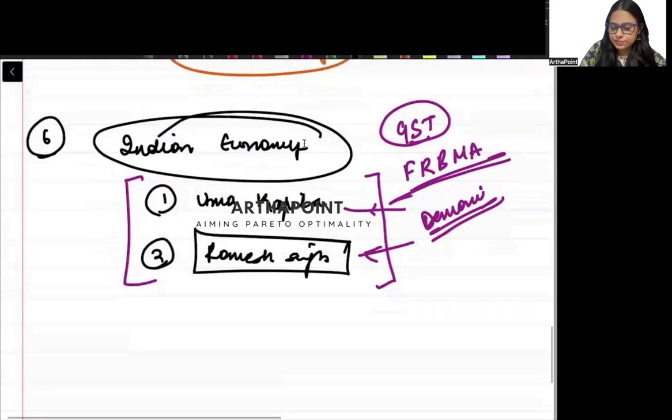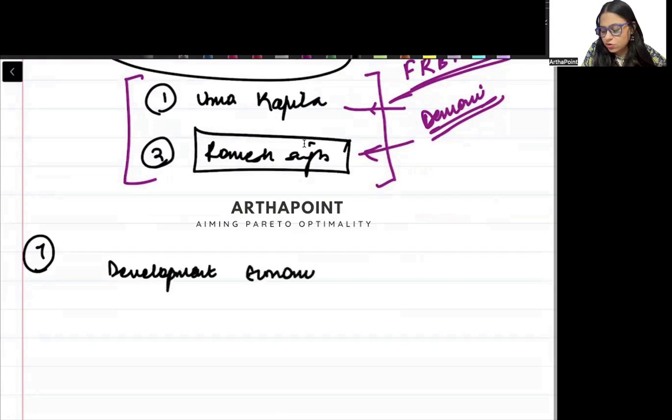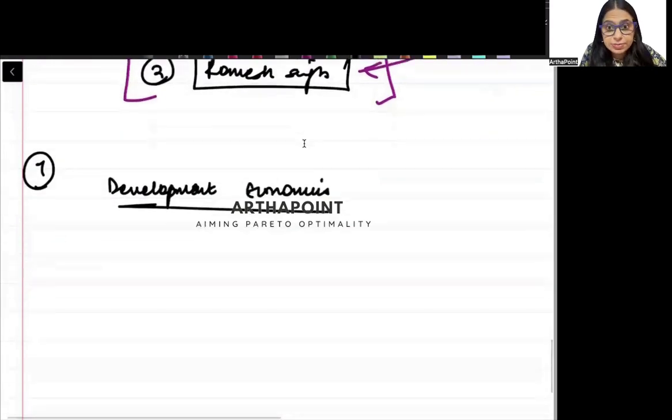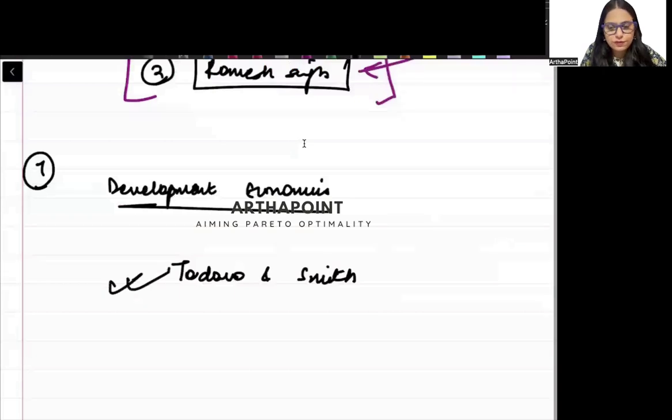Then you have Development Economics. For Development Economics, again, there are multiple books. And one of the very good book that you can have will be Todaro and Smith. You can refer to this book for a lot of aspects of development economics for what is development, what is growth, what are human development index, etc. What are sustainable development goals, MDGs, SDGs.